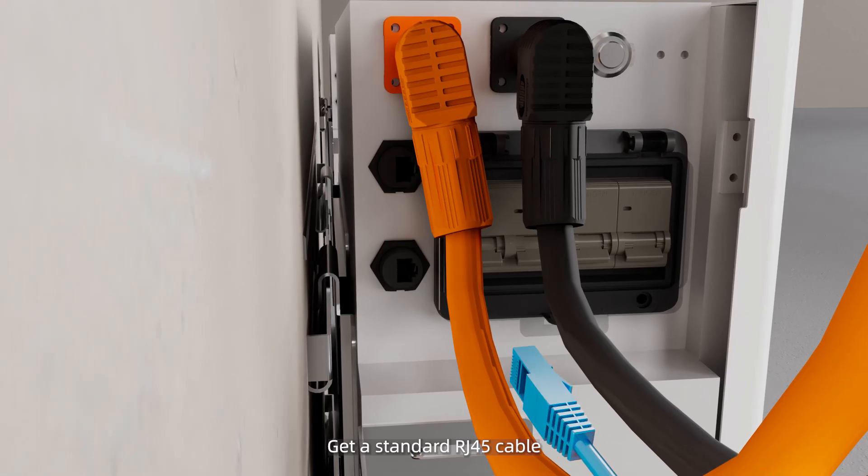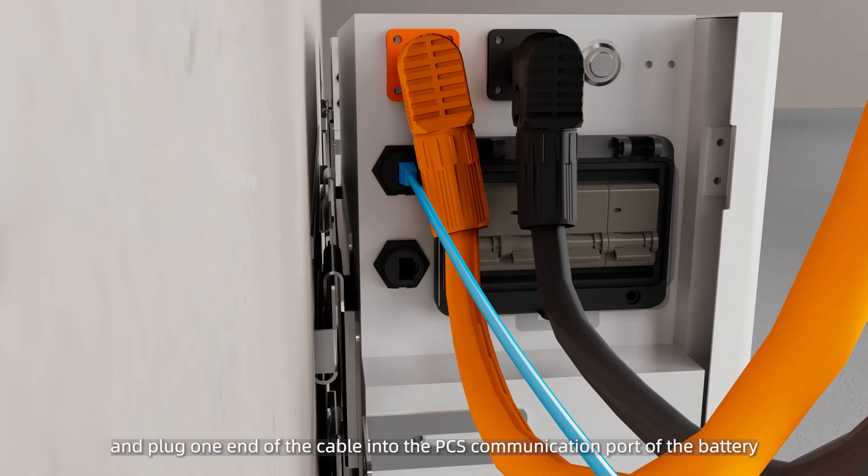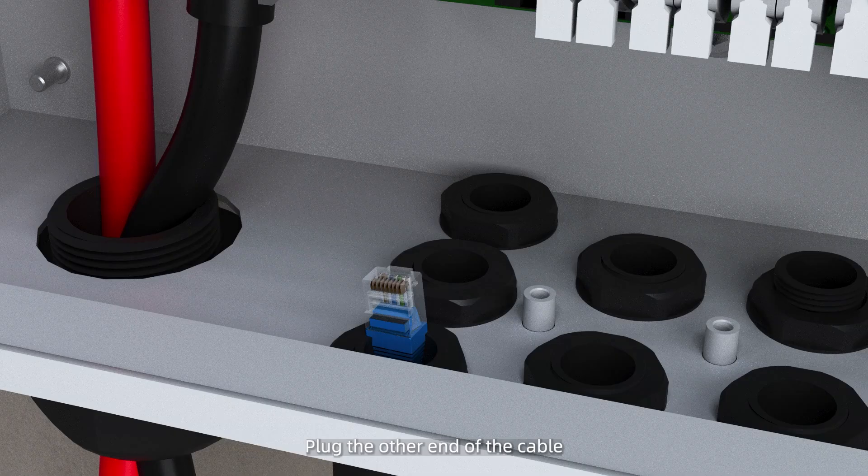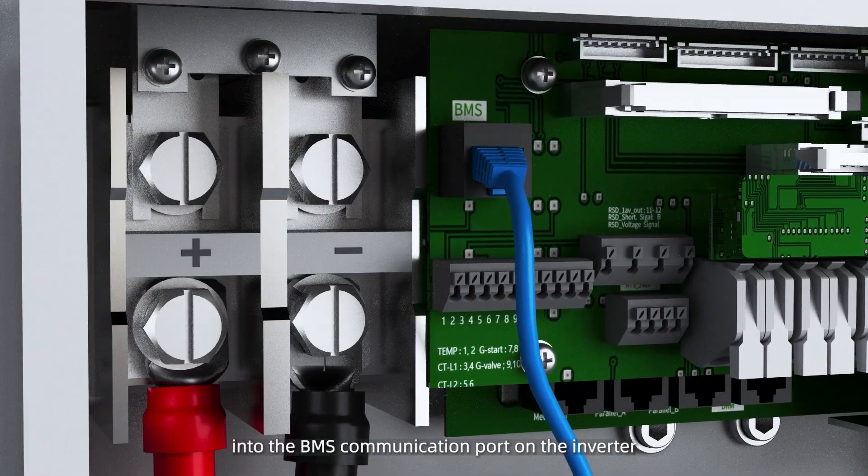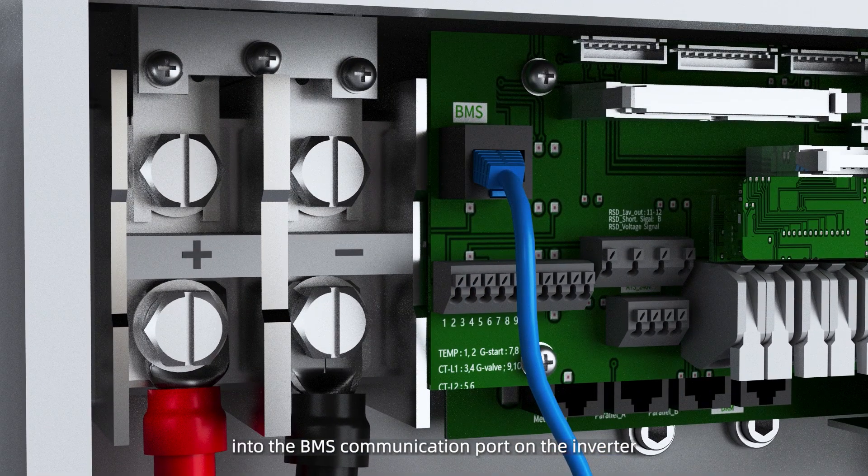Get a standard RJ45 cable and plug one end of the cable into the PCS communication port of the battery. Plug the other end of the cable into the BMS communication port on the inverter.